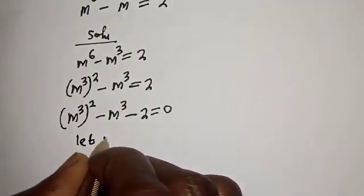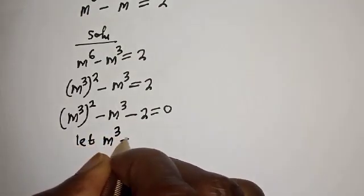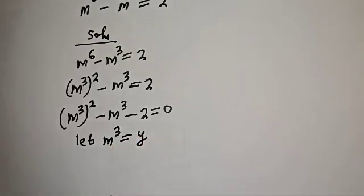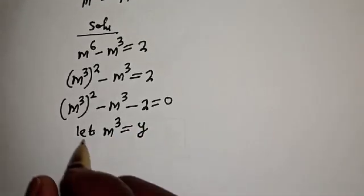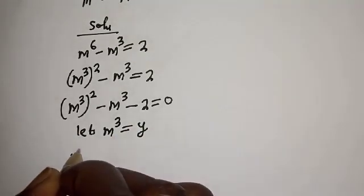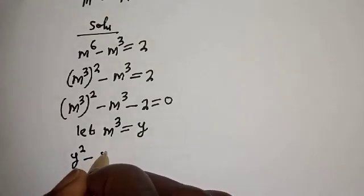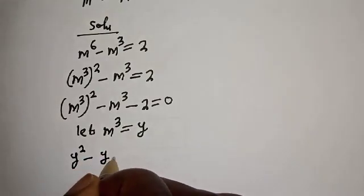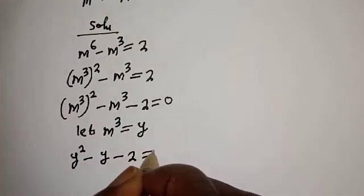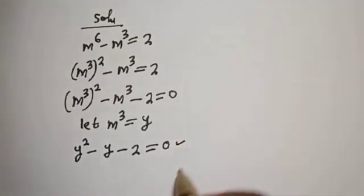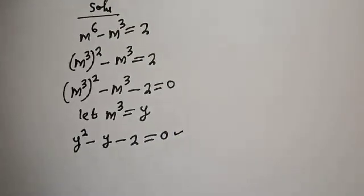Let m raised to power 3 be equal to y. Then we have y squared minus y minus 2 is equal to 0. This is a quadratic equation.